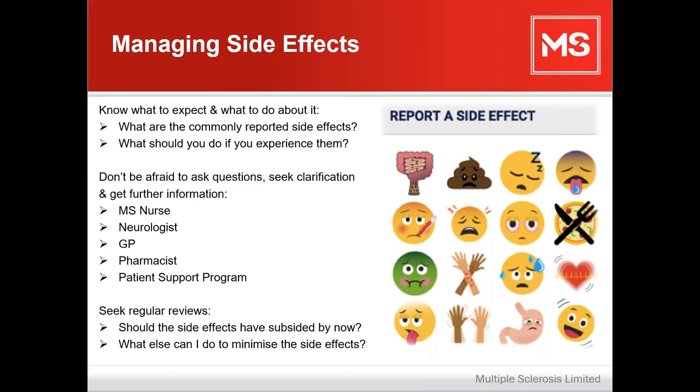A neurologist is a very good source of information and the best person to speak to if you can. A GP, a pharmacist, and a patient support program are also valuable resources — I'll go into patient support programs a little bit later. Seeking regular reviews is really important too.